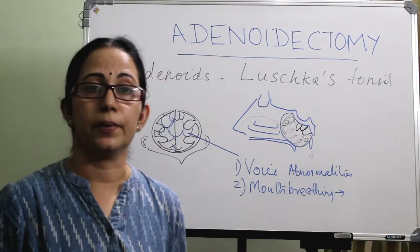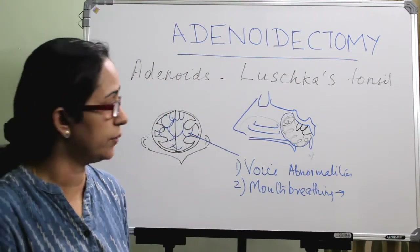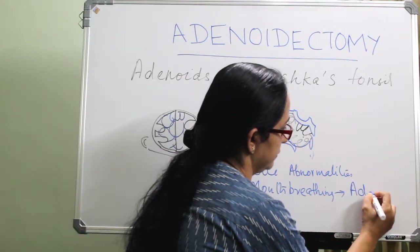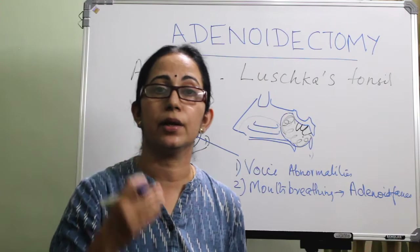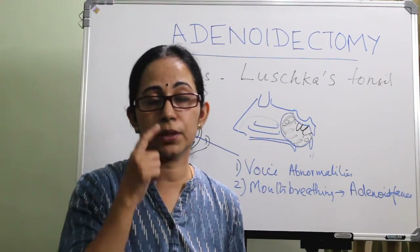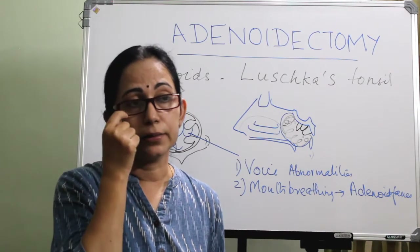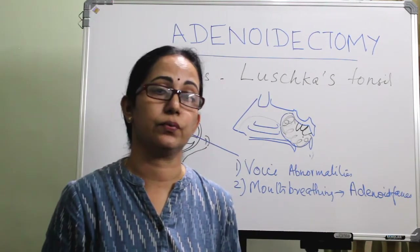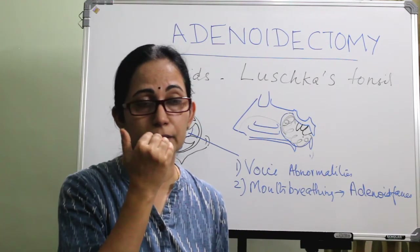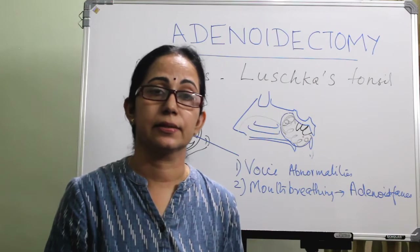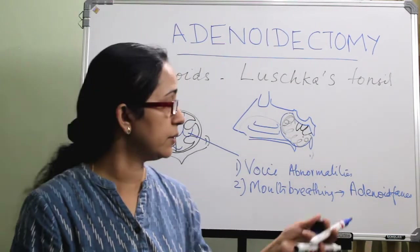In long-standing mouth breathing, there is elongation of the middle one-third of the face, leading to adenoid facies. What is adenoid facies? It is a typical elongated face with a dull expression. Because the child is not breathing through the nose for a long time, there is atrophy of the alae nasi, giving a pinched-in appearance of the nose, open mouth with hitched-up upper lip, protruded upper medial incisors, and a high-arched palate.